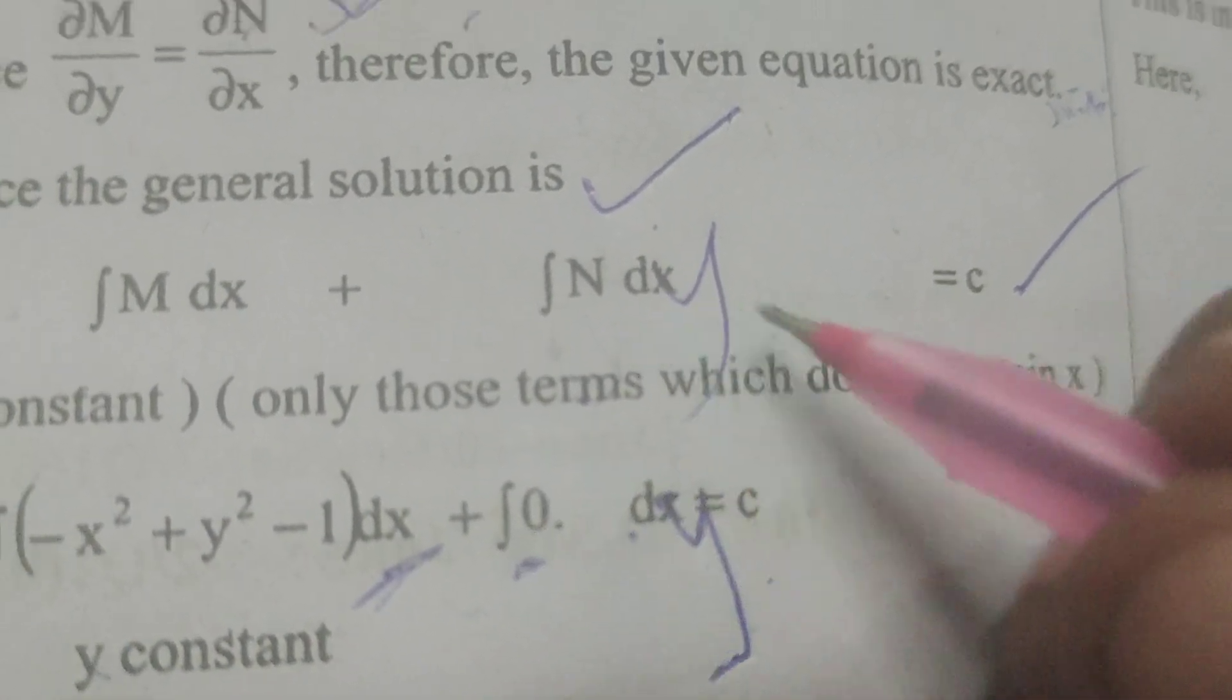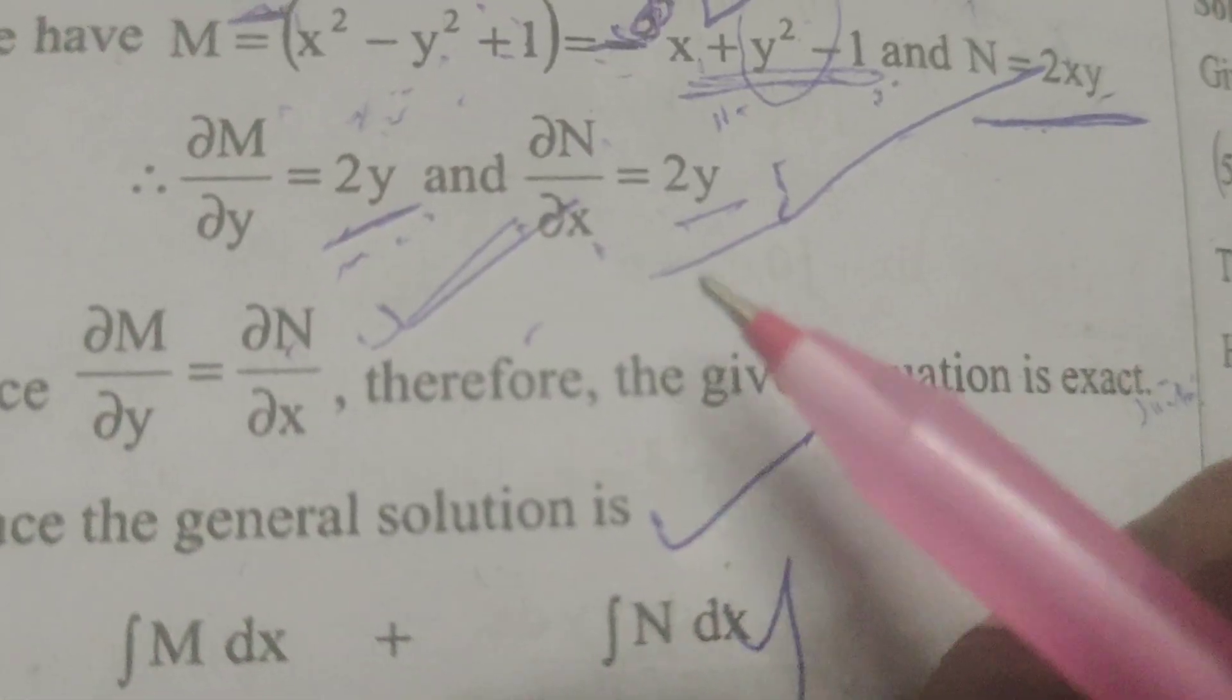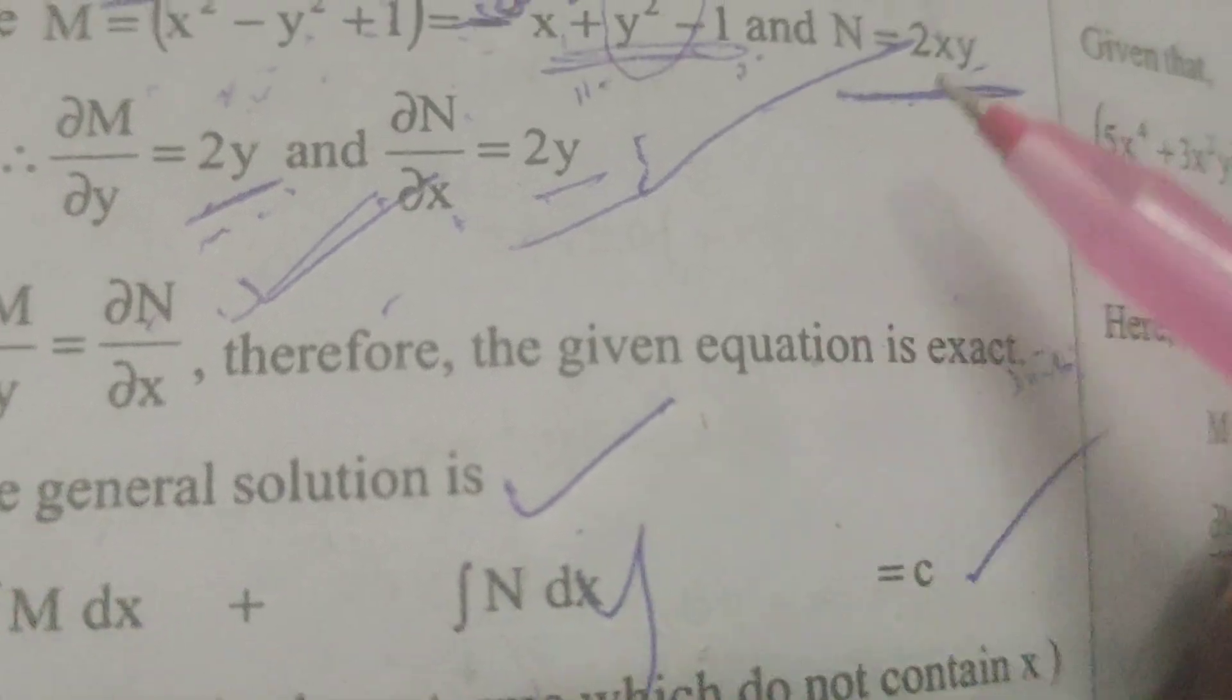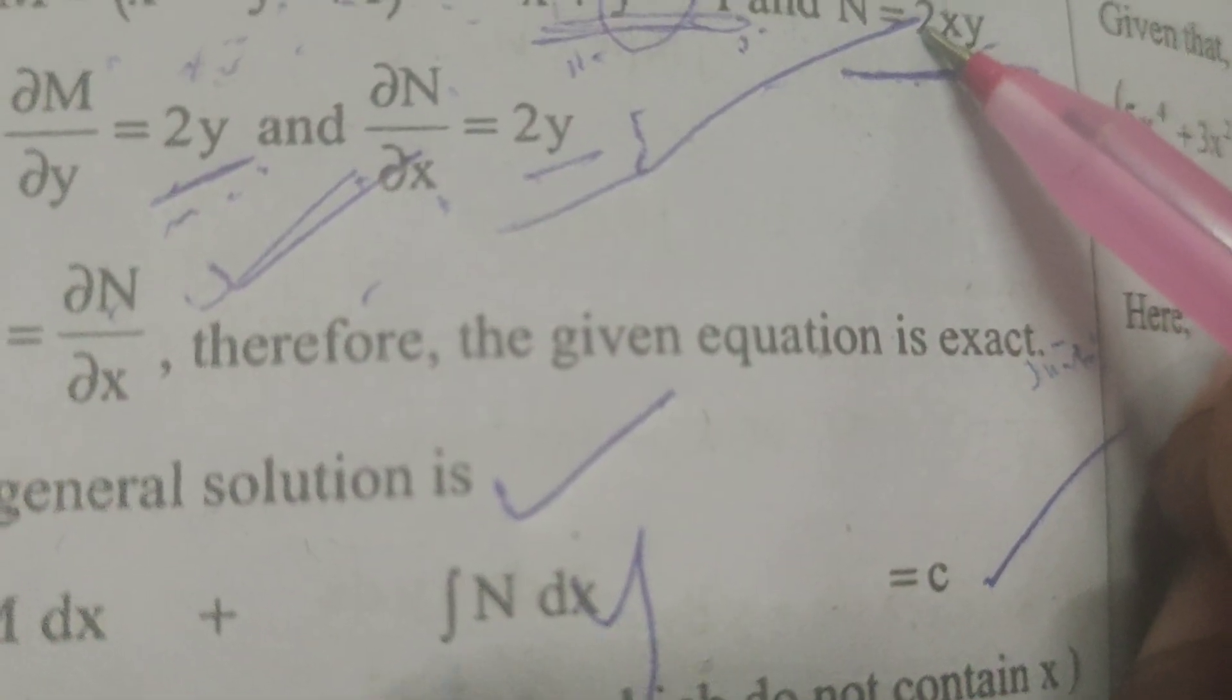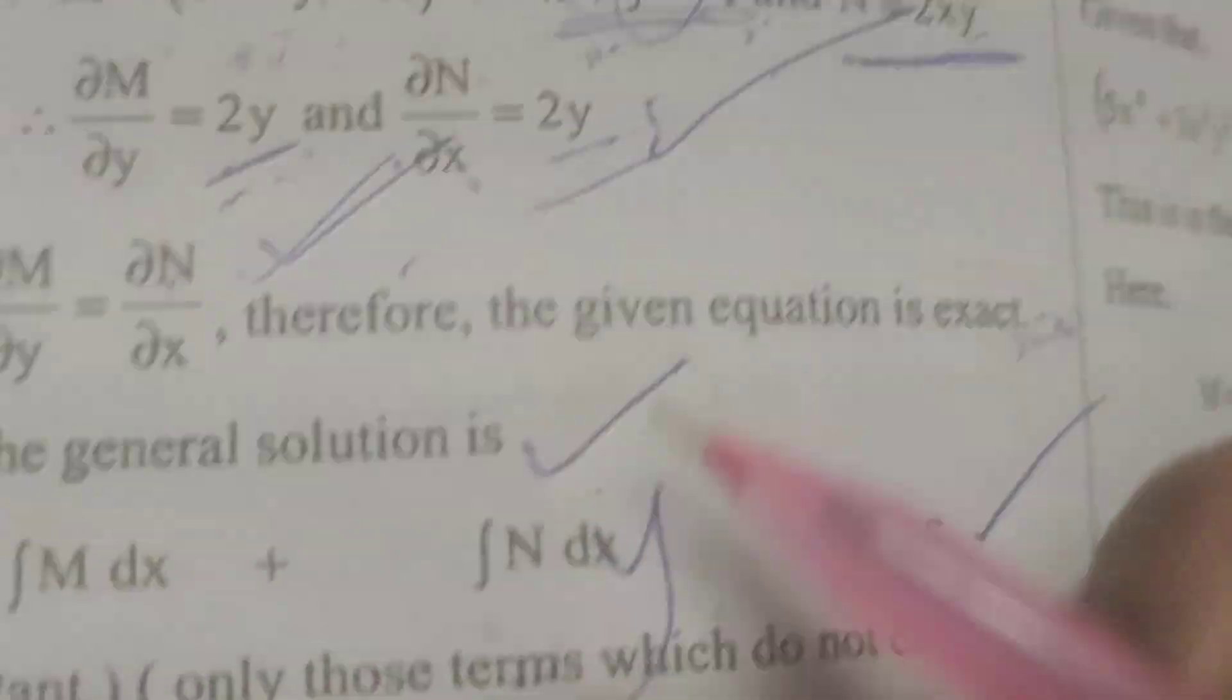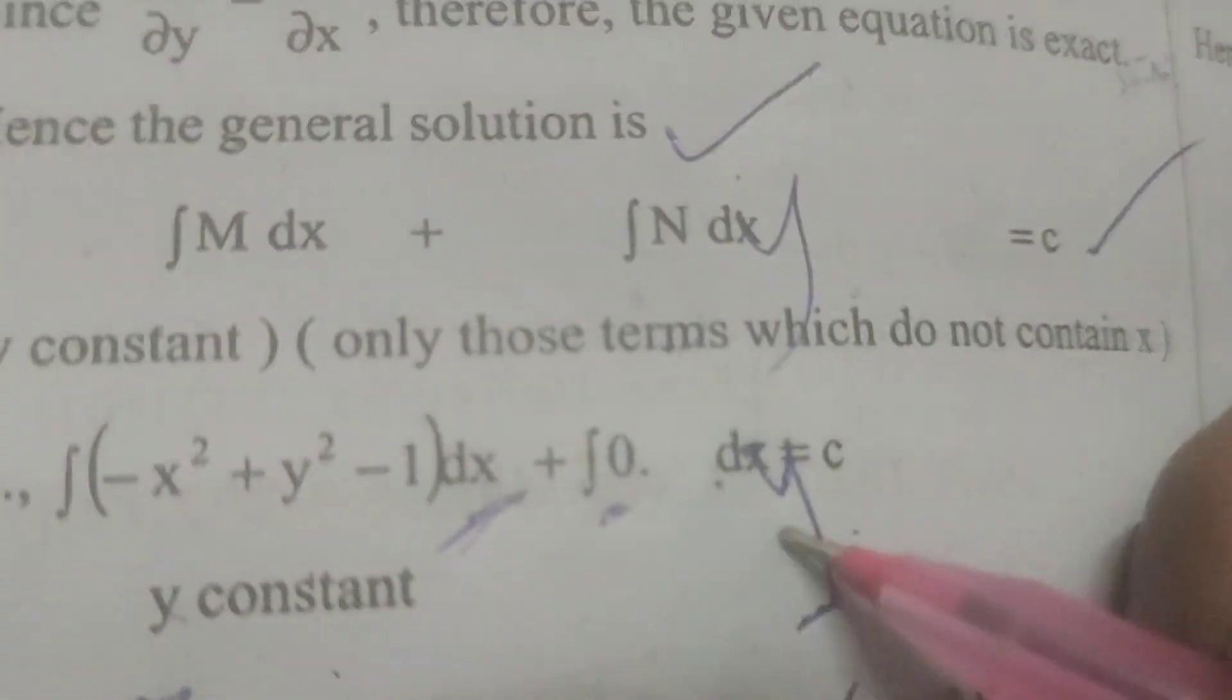Here, N dy. I mean, here N. Then we are going to take there is no y term. Here, y term is there. So N means 0.